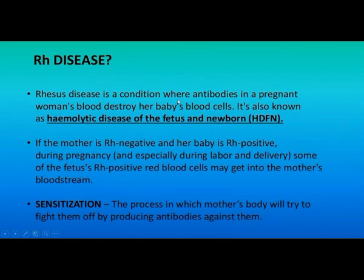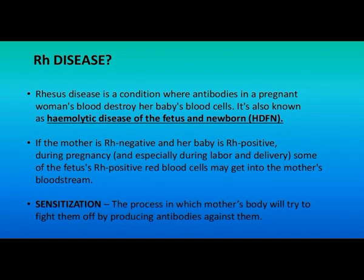Rhesus disease is a condition where antibodies in a pregnant woman's body destroy her baby's blood cells. It is also known as hemolytic disease of the fetus and newborn. If the mother is RH negative and her baby is RH positive, during pregnancy and especially during labor and delivery, some of the fetus's RH positive red cells may get into the mother's bloodstream — that is the time when separation of the placenta occurs.